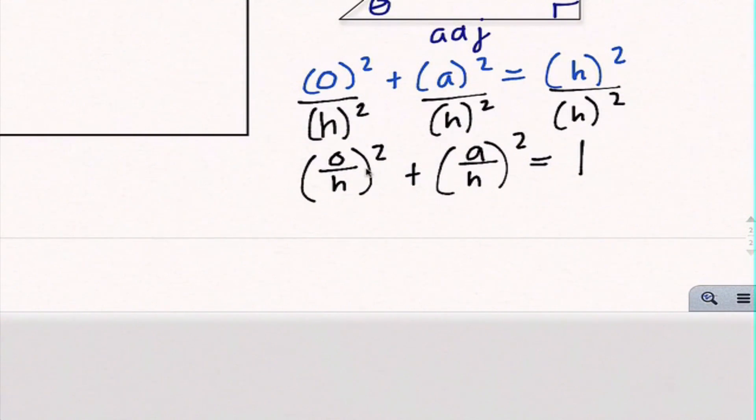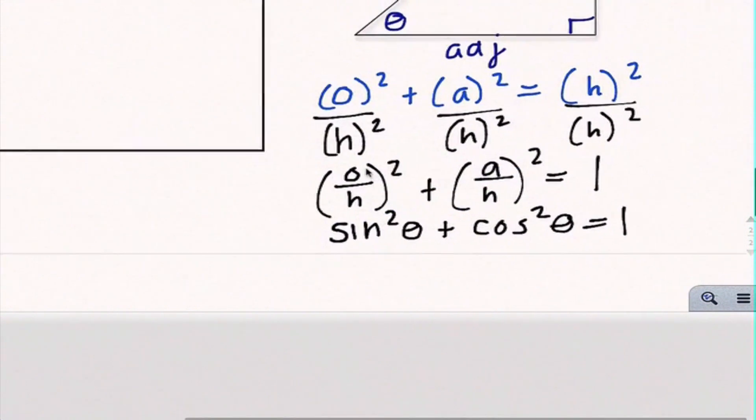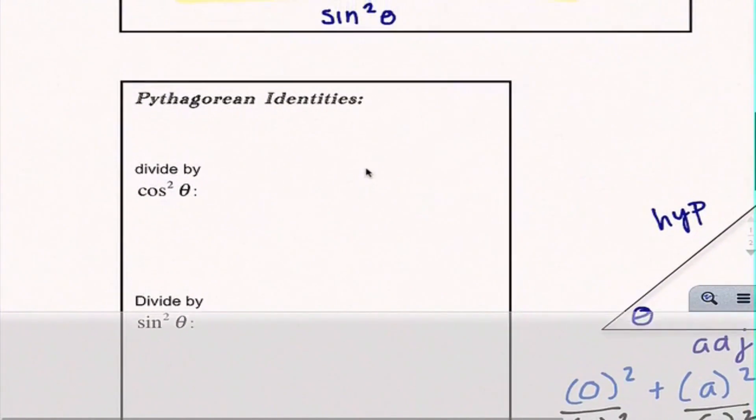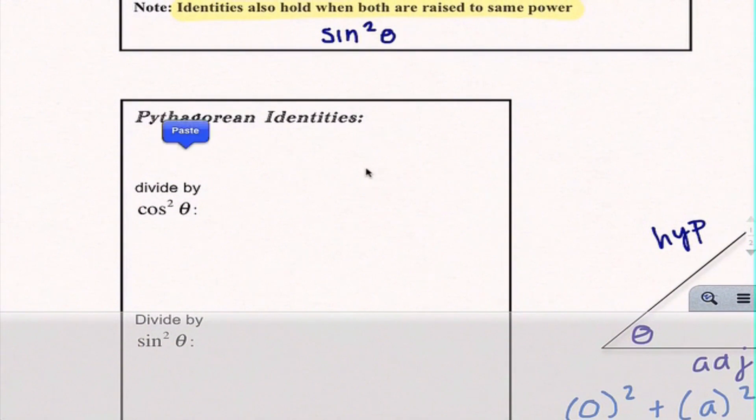And this gives us something that should look a little bit familiar. In fact, since I have squared over squared, I'm going to make this O over H squared plus A over H squared, and I know anything divided by itself is just one. Now if we think about it, opposite over hypotenuse is one of our trigonometric functions, that is sine. So I'm going to write this as sine squared plus adjacent over hypotenuse is cosine squared, and that is equal to one. This is our very first Pythagorean identity.